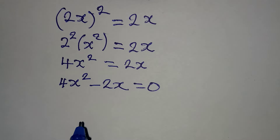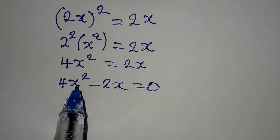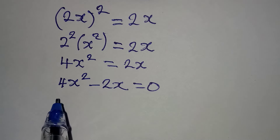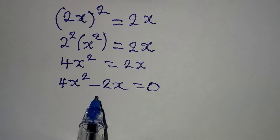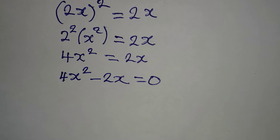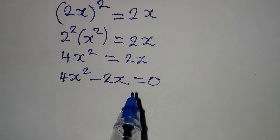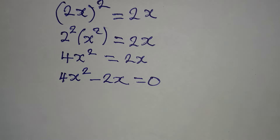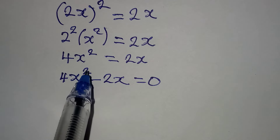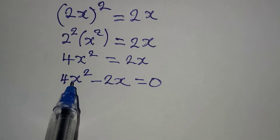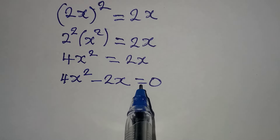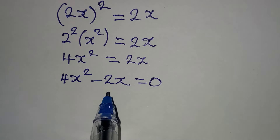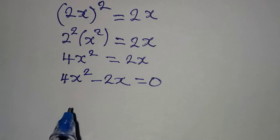This is now a quadratic equation because of the power of 2. The only thing missing is the constant, but that doesn't prevent it from being quadratic. The three things that make an equation quadratic are: the highest power of 2, the unknown, and the equal sign — all three are present here.